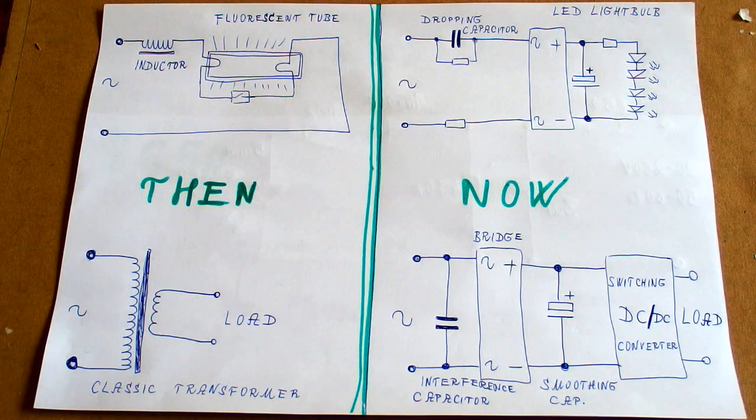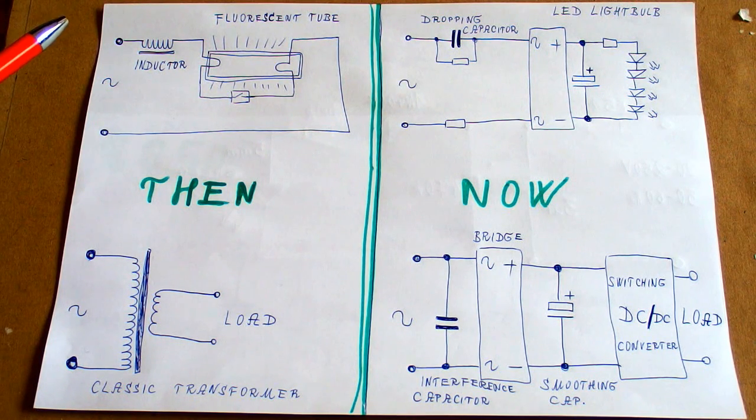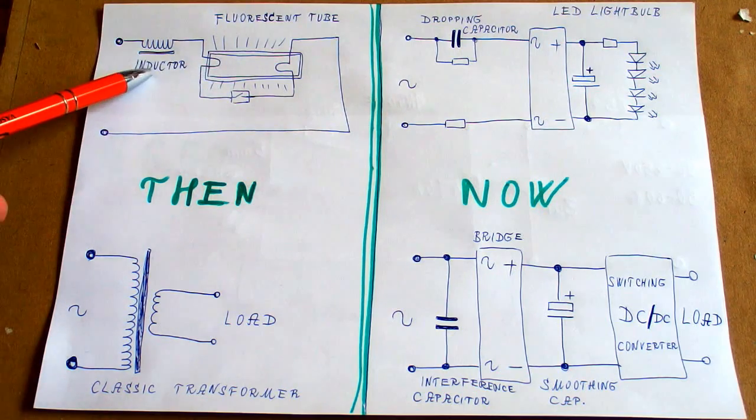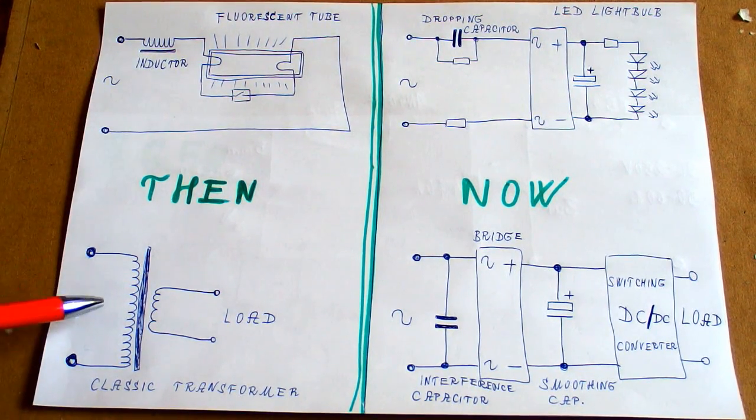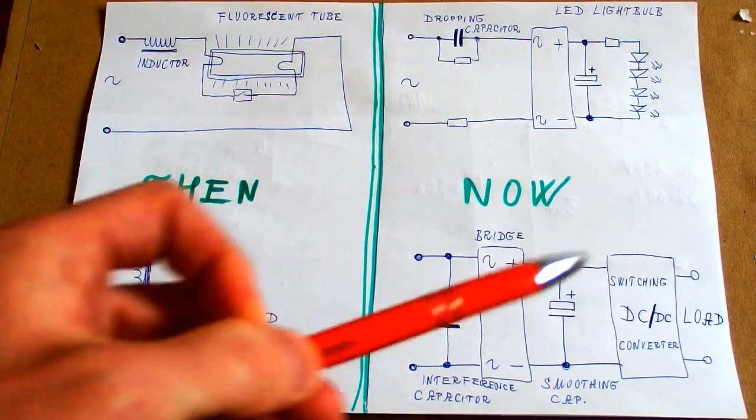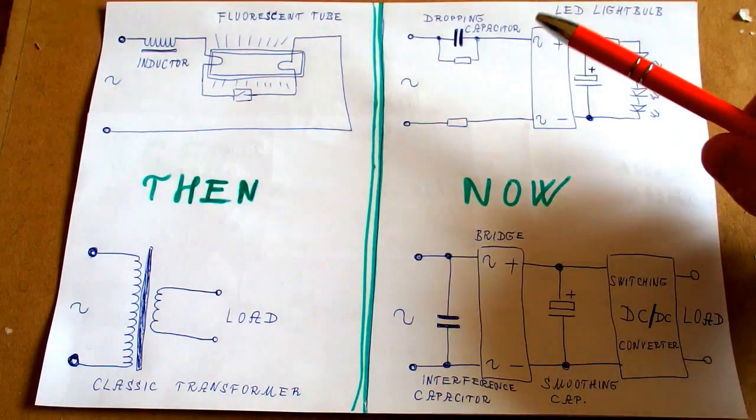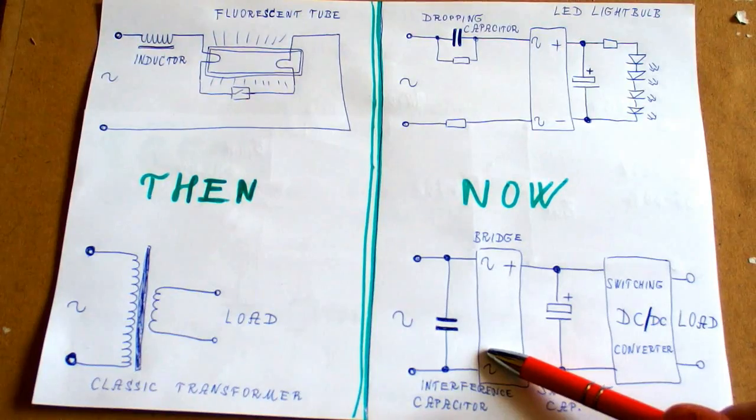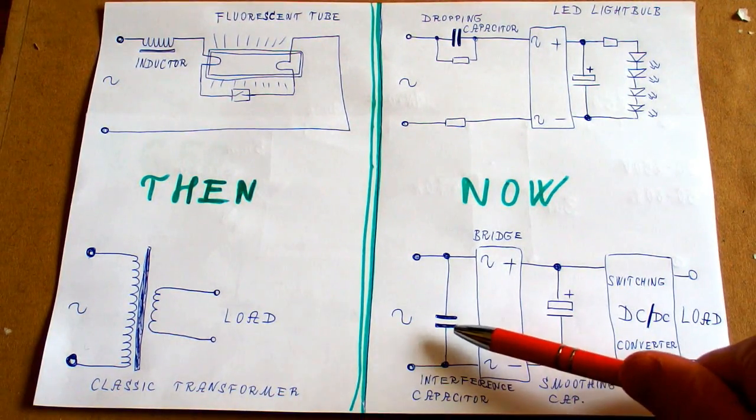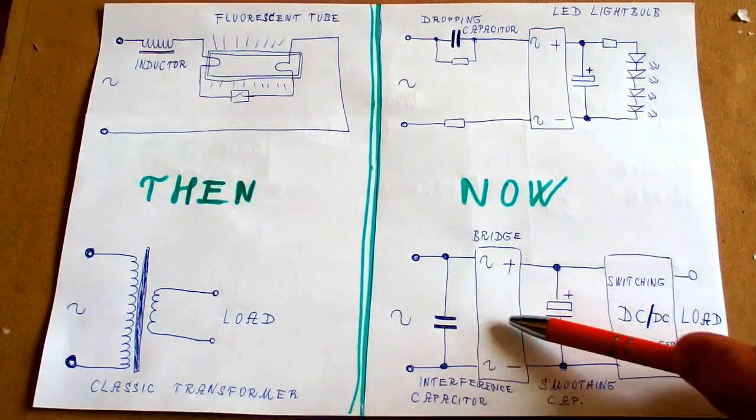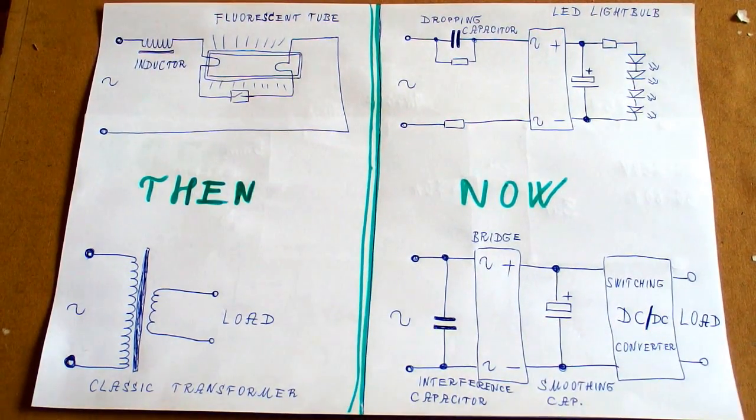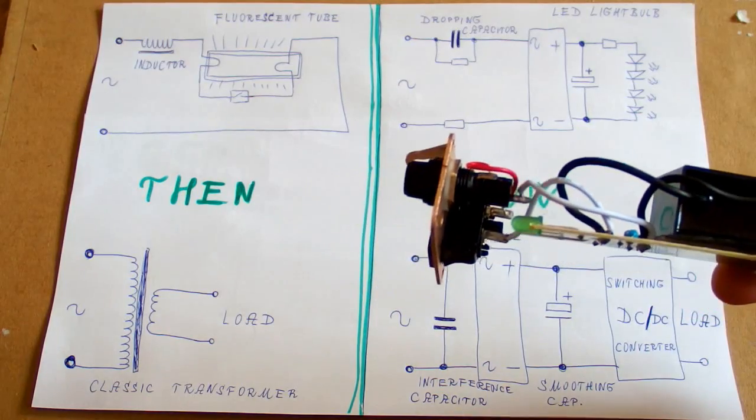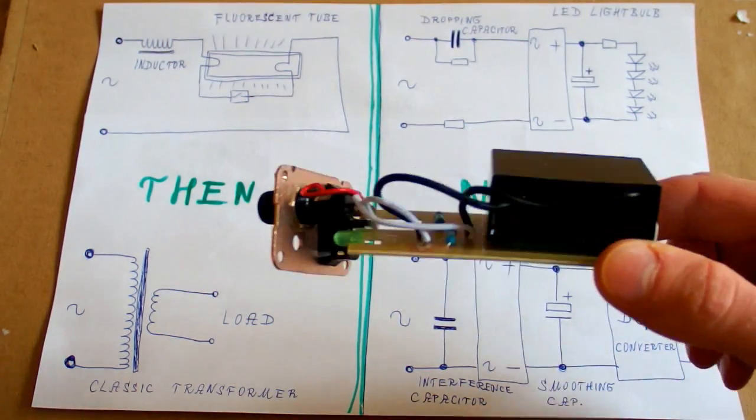It's also very likely that you don't need any compensation at all. In the old days you had a lot of inductive loads like fluorescent tubes with an inductor in series or classic transformers. But nowadays you mostly have LED light bulbs with a capacitive dropper or switching power supplies with an interference capacitor at the input then there is a bridge and another capacitor. So it's very likely that the power factor of your household is already capacitive and this capacitor makes it even worse.